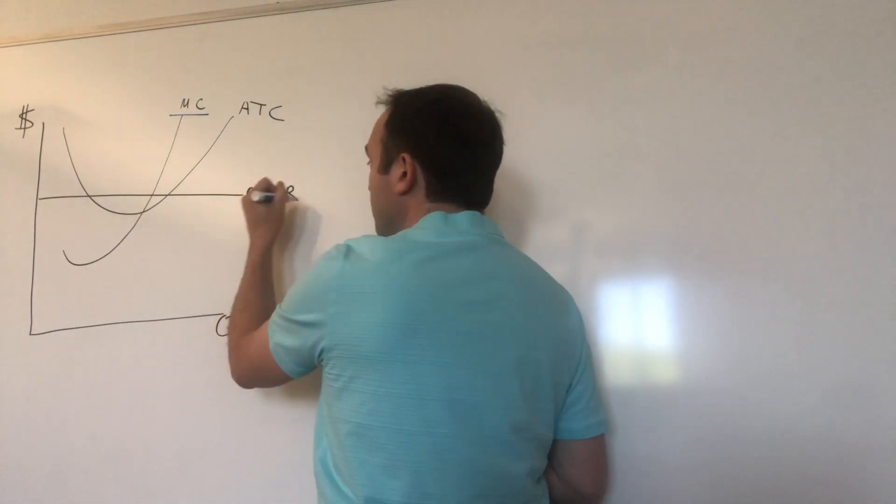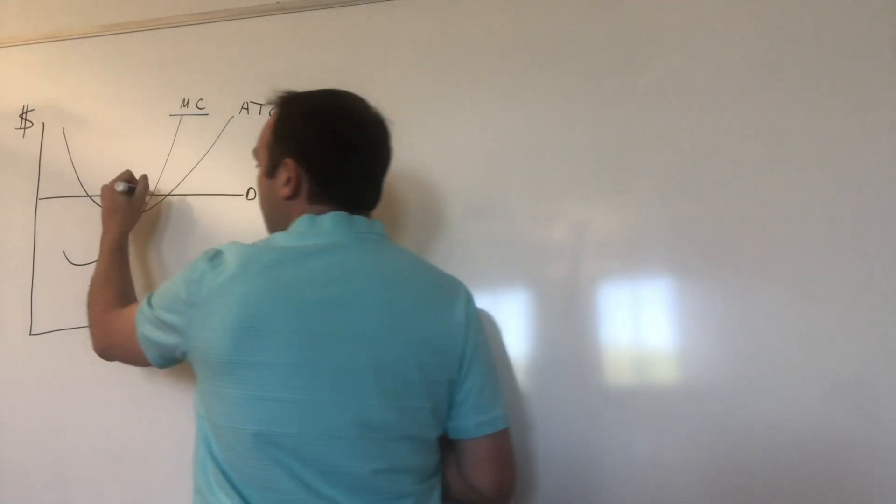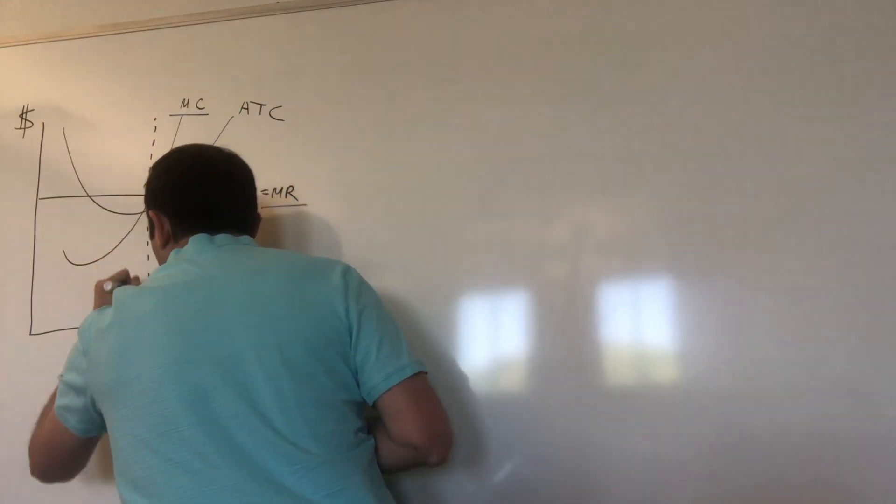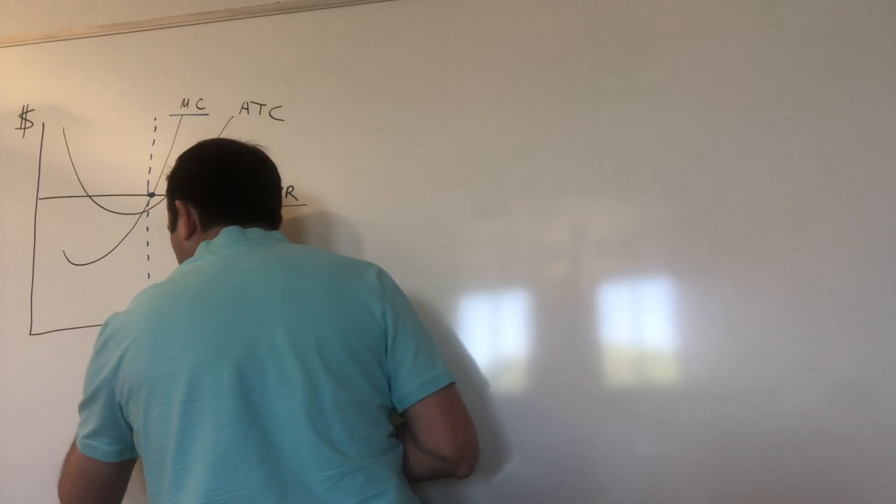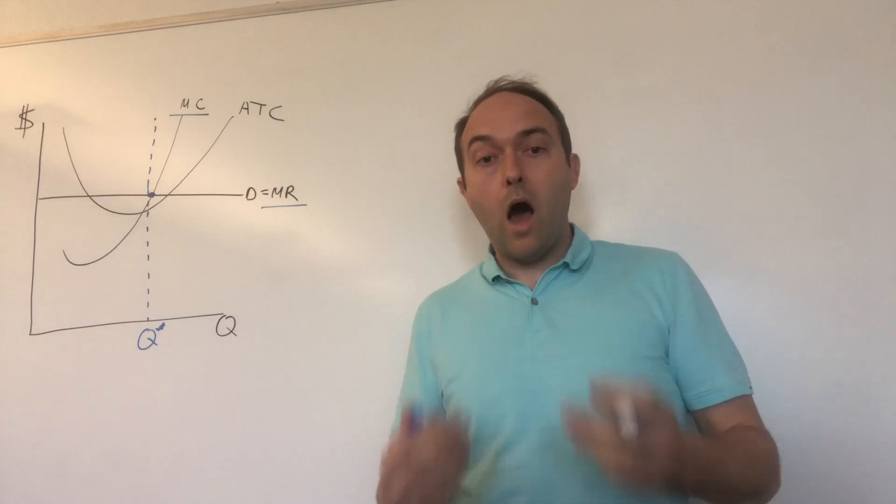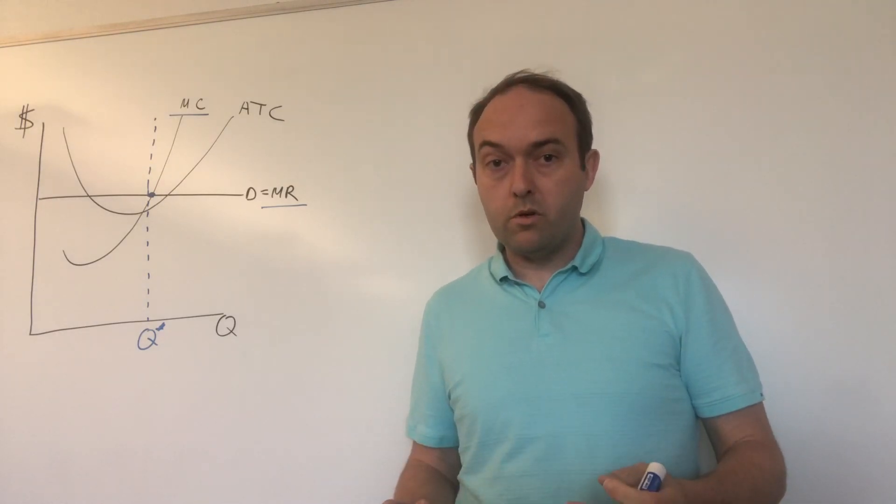So in our graph that looks like this. Marginal cost here, marginal revenue here, they intersect at this point. So you want to draw a vertical line through that point of intersection. And what I'm labeling Q star here on our graph is the optimal quantity for this firm to produce.